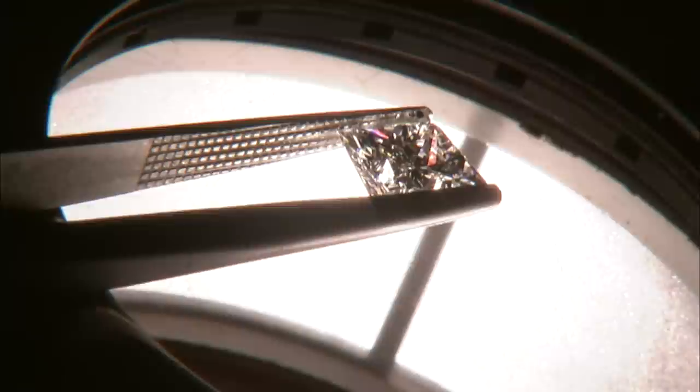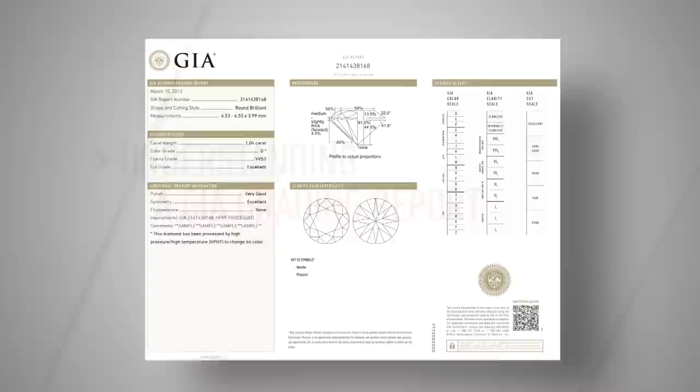A grading report from GIA is more than a collection of observations about a gem. It represents an accurate, unbiased, comprehensive scientific investigation. Now, let's review the main components of a GIA grading report.